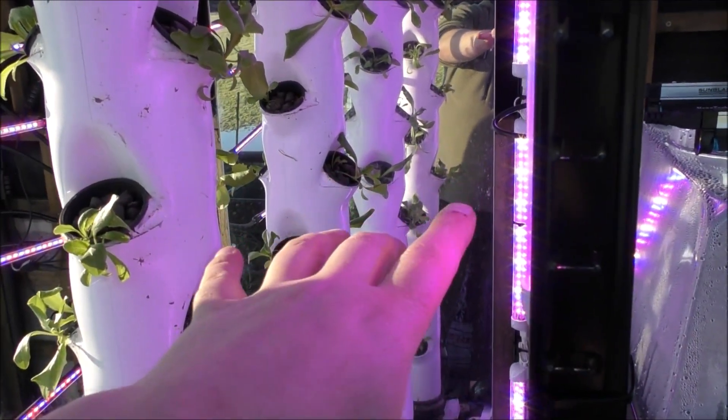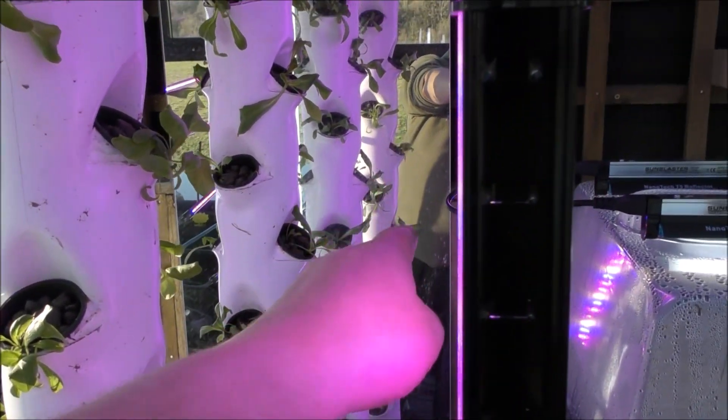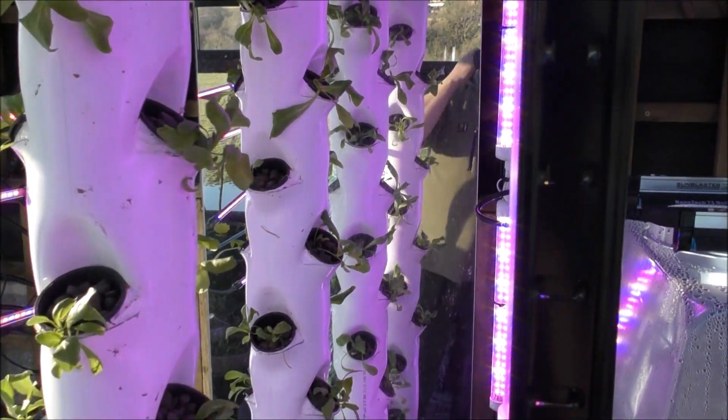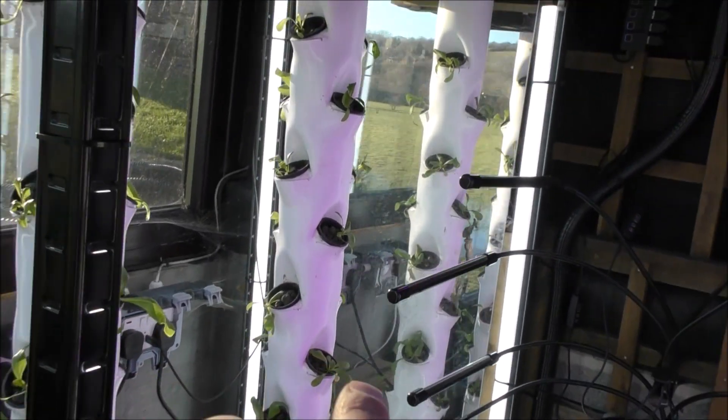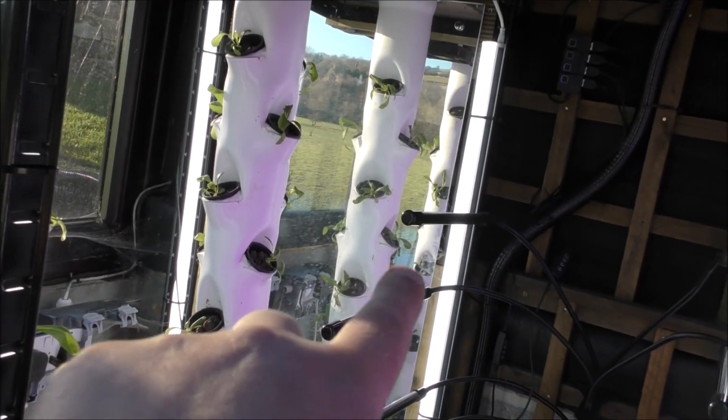That looks like I've actually got 4 pipes, but I haven't. On the back I've got a mirror just to bounce the light back. So there's actually only 2 pipes here and 2 pipes here. They are just reflections.